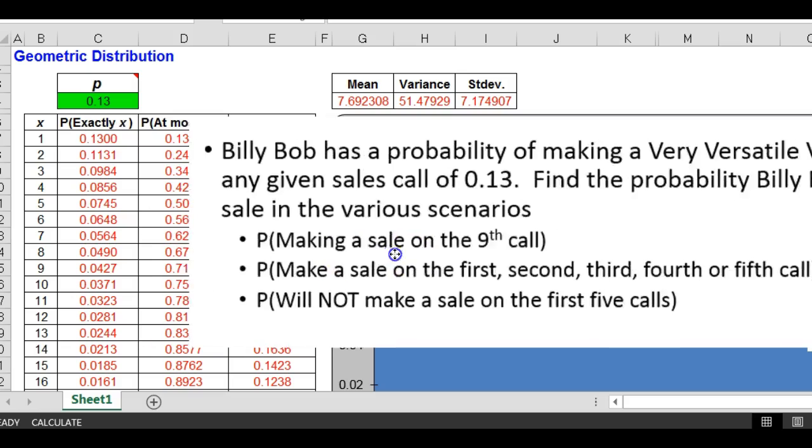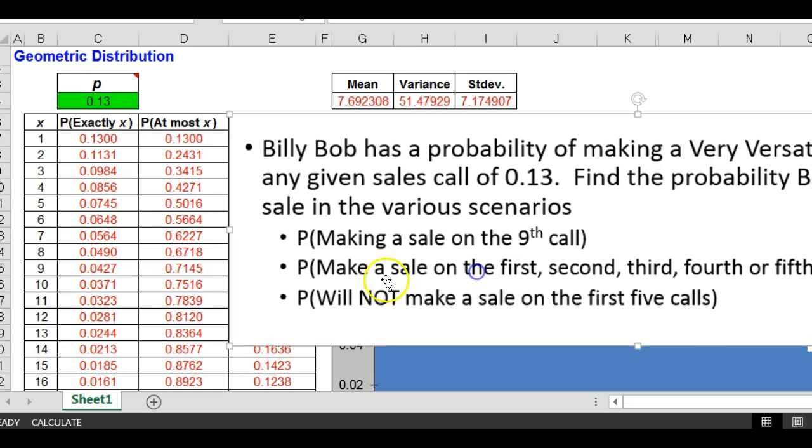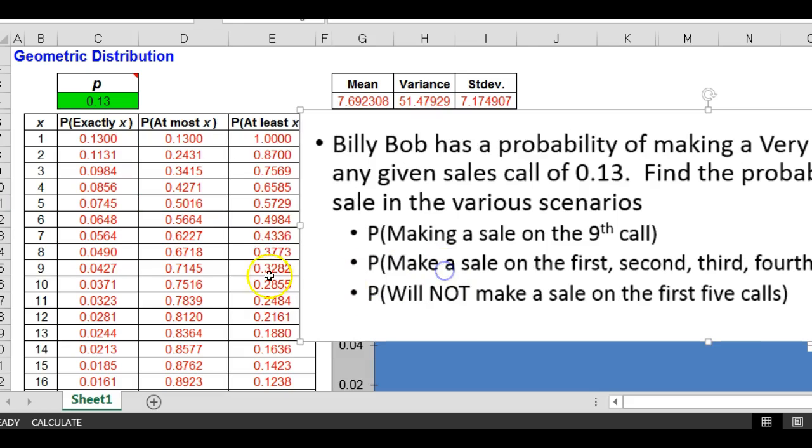Making his first sale on the ninth call, .0427. That is unusual, that's less than five percent. Making a sale on the first, second, third, fourth, or fifth, that means at most it will take five calls, .5016. Will not make a sale, in other words, it will be at least six or more. So that probability under at least to the right of six would be .4984. Hopefully you'll see how easy this is. Take care.